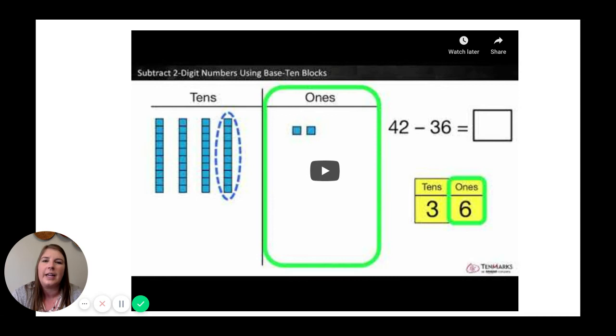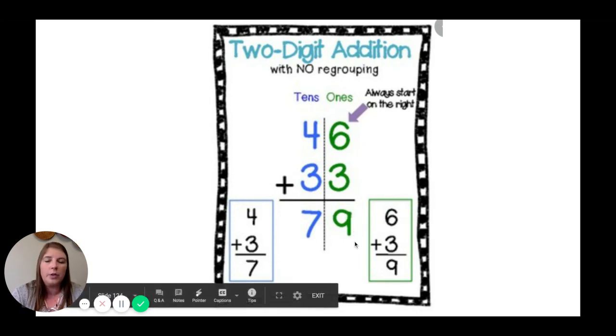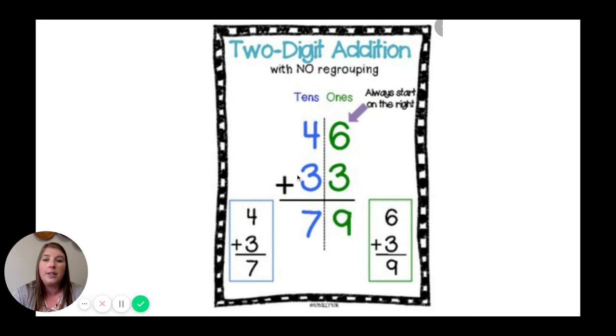Now we're going to review our second strategy using the standard algorithm. So parents, this is the strategy that you will be most familiar with. So for two-digit addition with no regrouping, we always start in the ones place. When we add 6 plus 3, that equals 9. We do not need to regroup. So we can go on and add the tens place. 4 plus 3 equals 7. So 46 plus 33 equals 79.